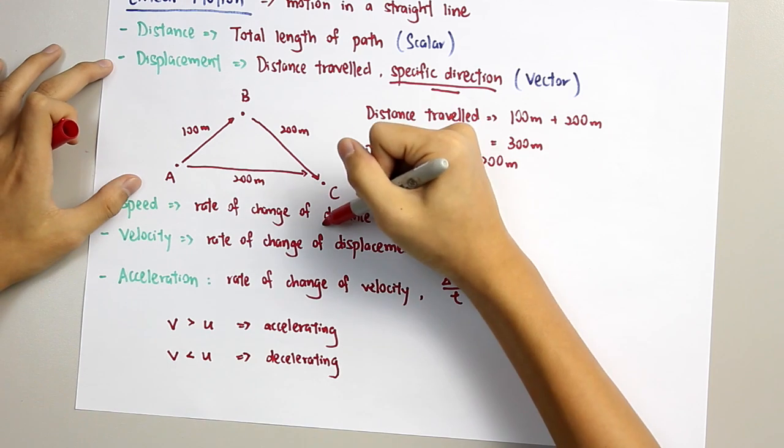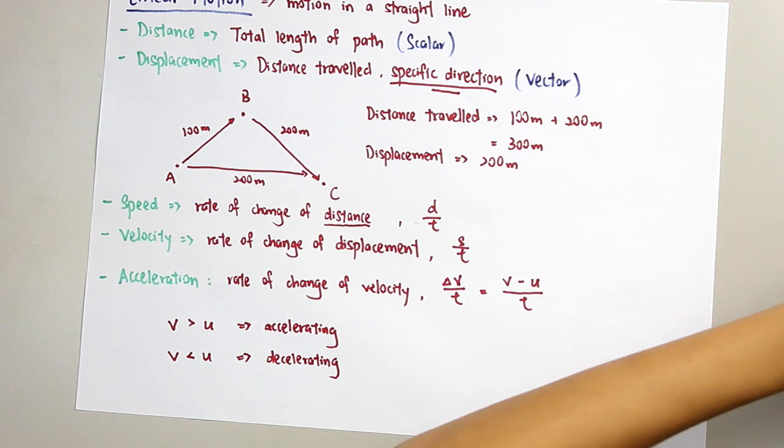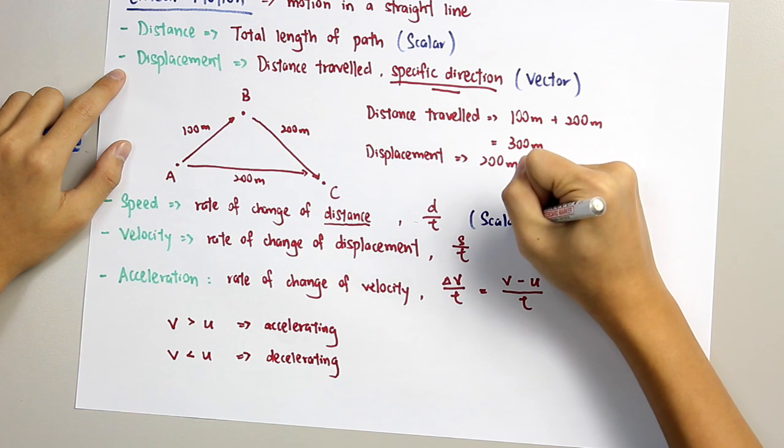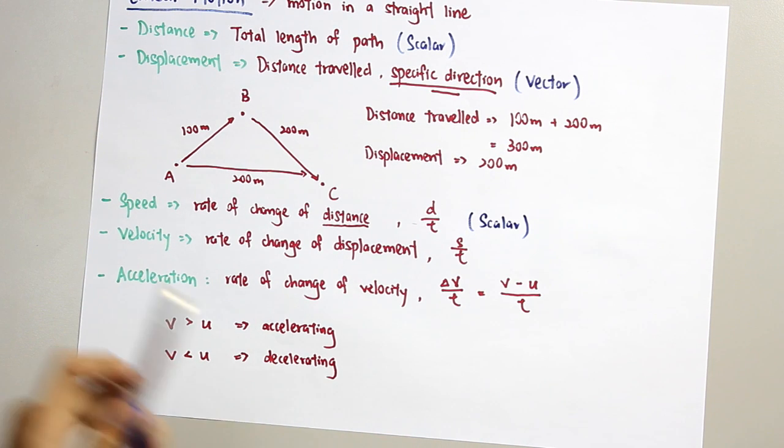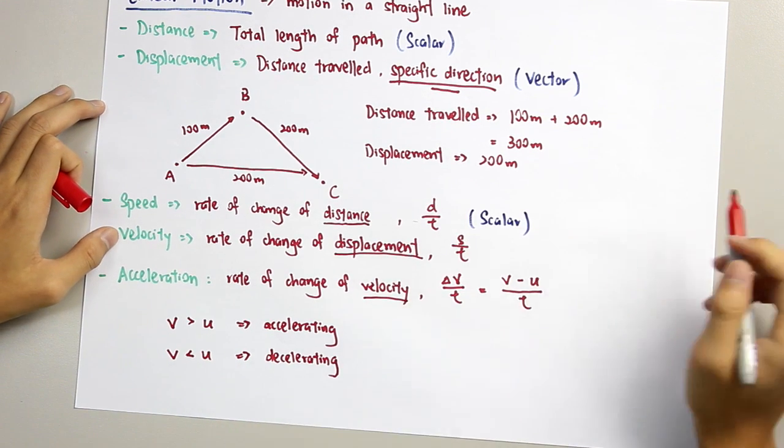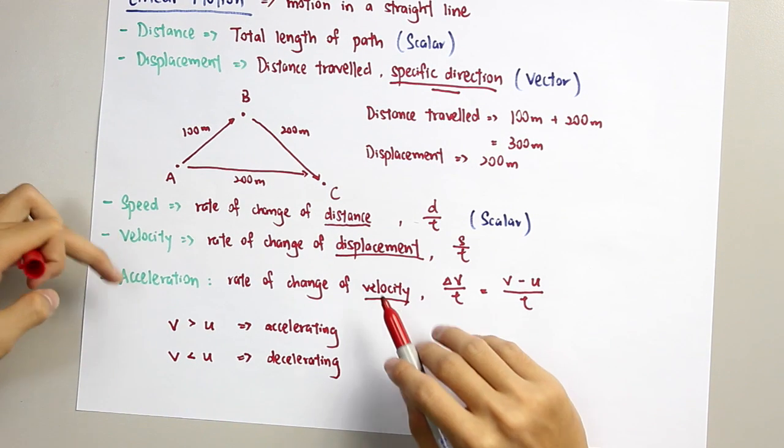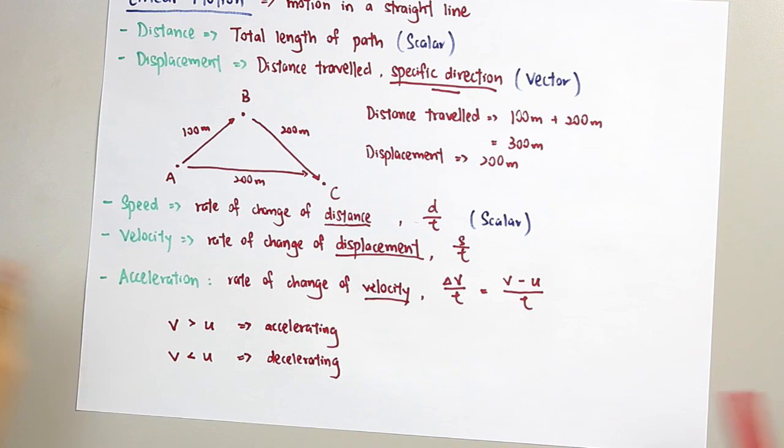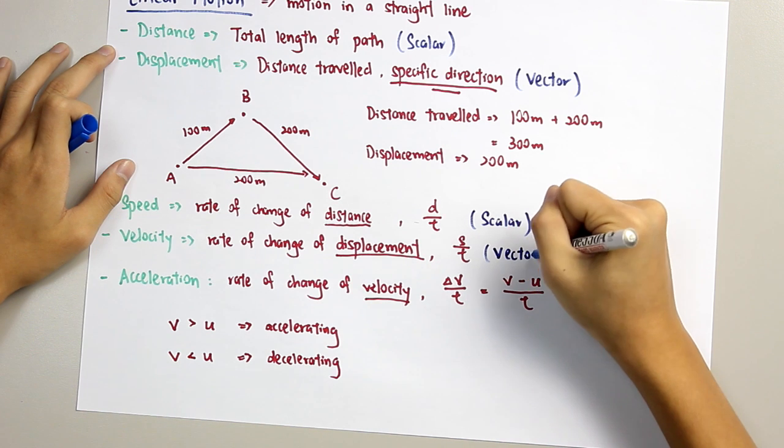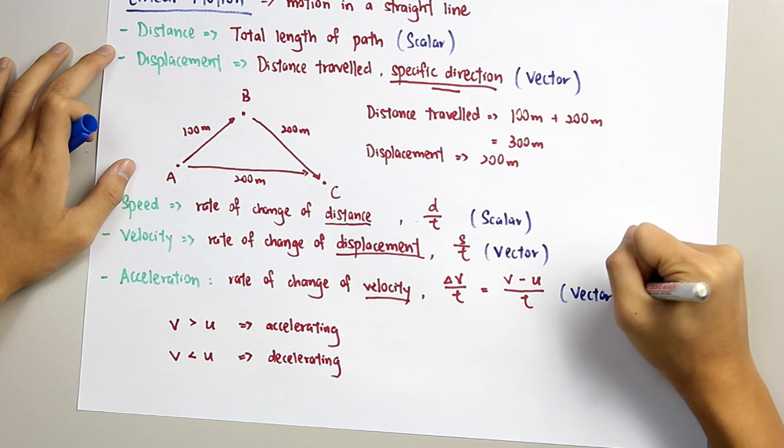And look at the definition. The rate of change of distance. Therefore, the speed is a scalar. And the velocity and acceleration, so this displacement is a vector quantity, and velocity is a vector also. So, both velocity and acceleration are vectors.